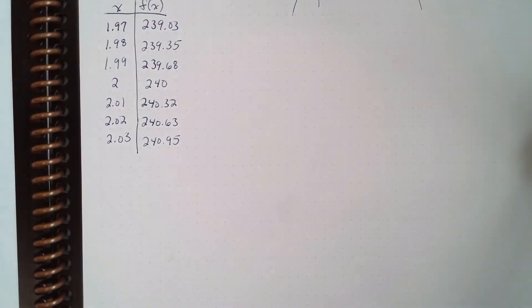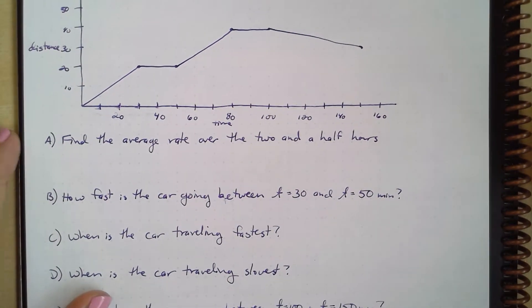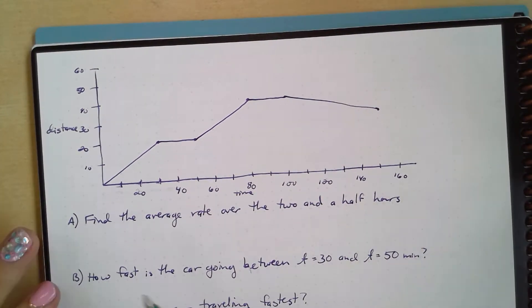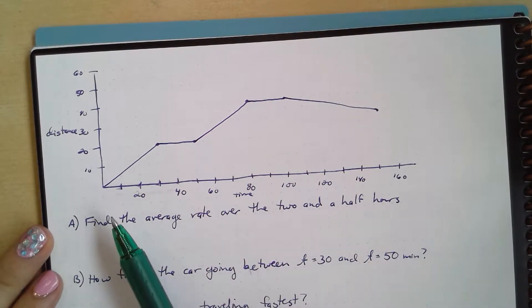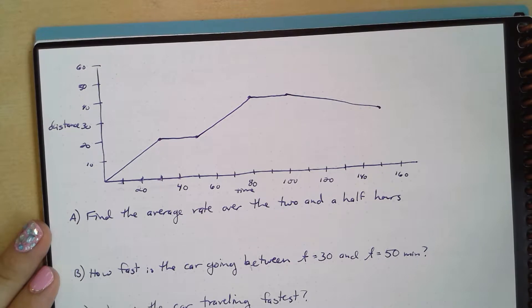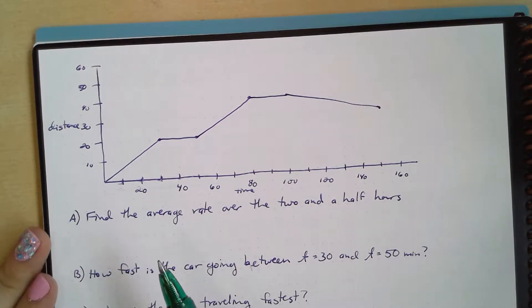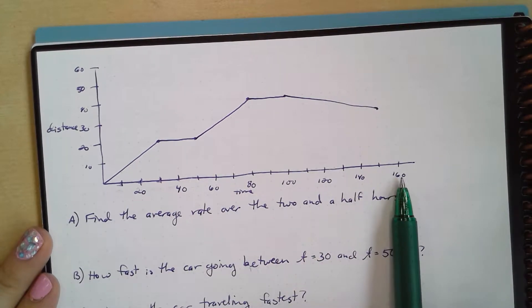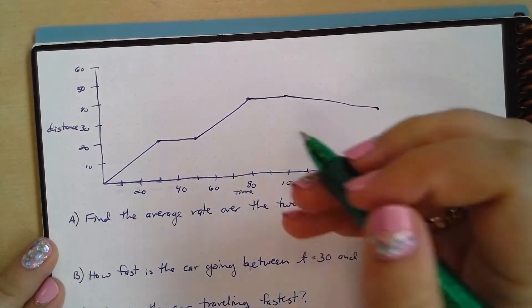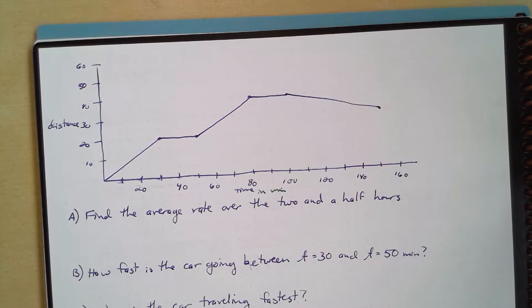So let's look at rate of change kind of graphically for a little bit here. Here we have a graph of a car moving. We want to find the average rate over the two and a half hours here. So you can see that we start at time is zero, and then we go up to like 150 minutes here. This is our time in minutes. We want to find the average rate of change over the two and a half hours.